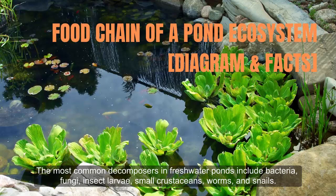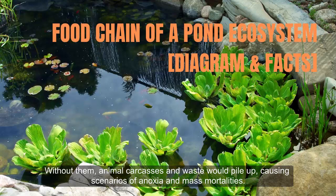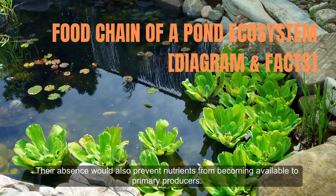The most common decomposers in freshwater ponds include bacteria, fungi, insect larvae, small crustaceans, worms, and snails. An extremely vital yet sometimes underappreciated component in freshwater ecosystems, decomposers keep the environment healthy. Without them, animal carcasses and waste would pile up, causing scenarios of anoxia and mass mortalities. Their absence would also prevent nutrients from becoming available to primary producers. In fact, they give food chains a cyclical instead of a strictly linear nature.